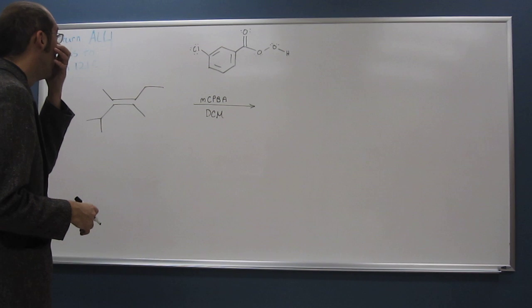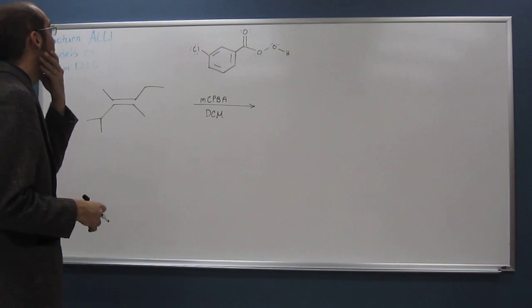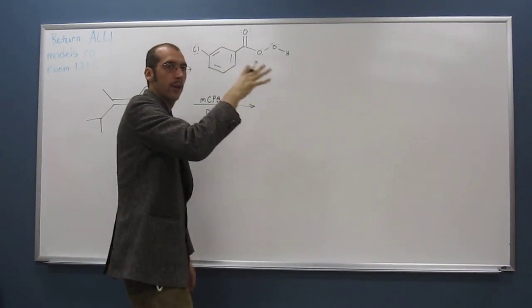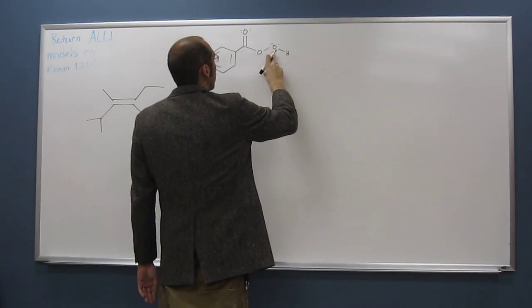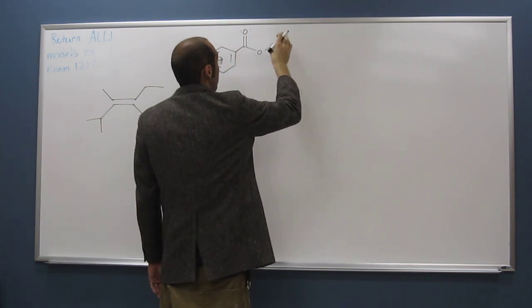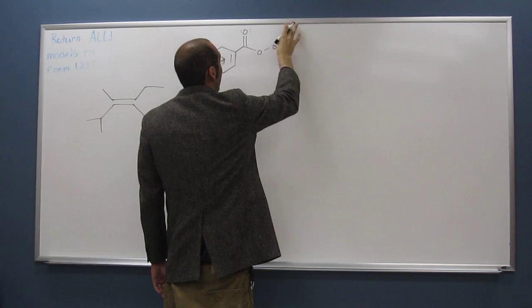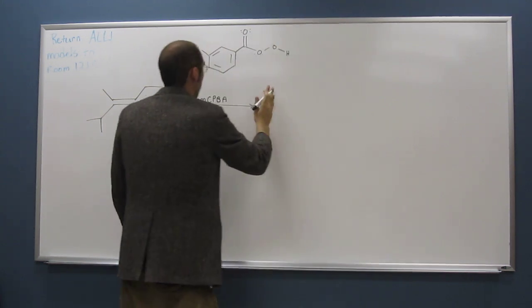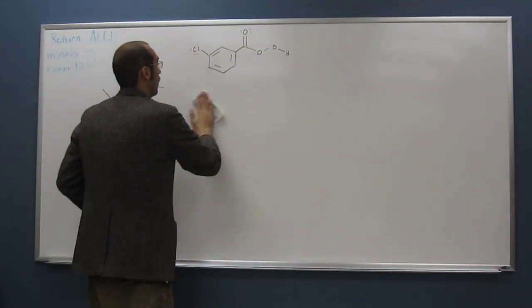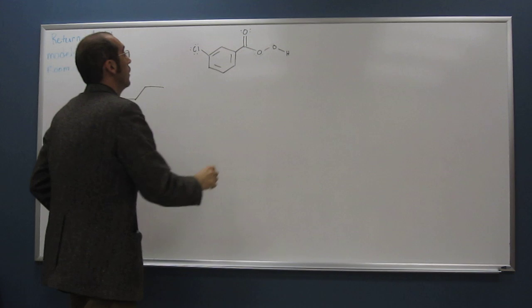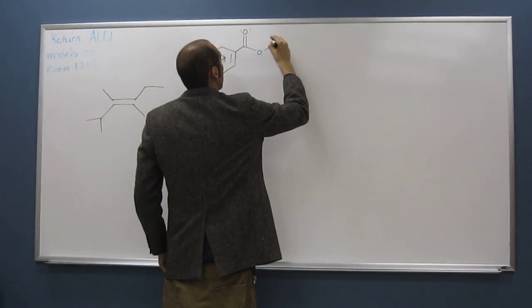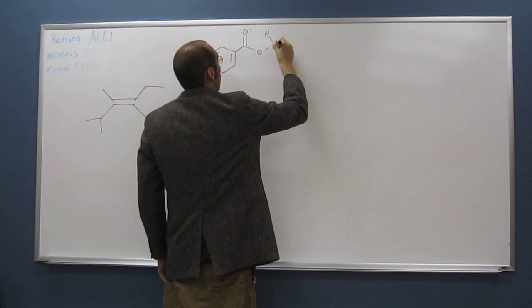But anyways, so what's going to happen here is there's going to be a concerted mechanism going on, right? Where you're going to have kind of a cyclic transition state here. So what I like to do is, here, I'm going to erase all of this part, too. What I like to do is actually draw this in a different conformation.